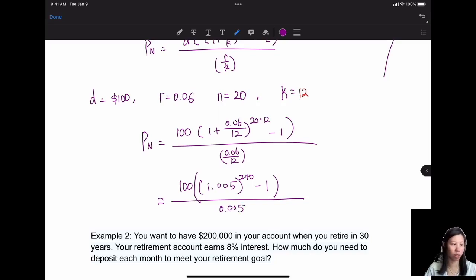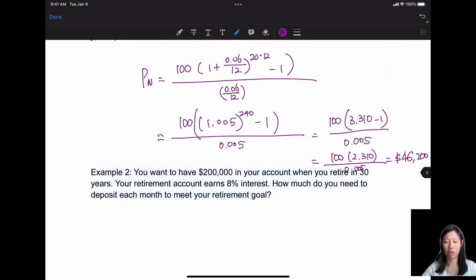Next is you want to calculate 1.005 to the 240 exponent is equal to 3.310. I would suggest you try to pause the video and try to do it by yourself and see if you get the same answer. And then next is whatever inside the parentheses which is 2.310 over 0.005, and then I assume you will know how to do the rest so you will have $46,200.